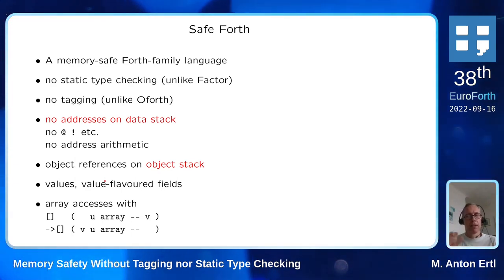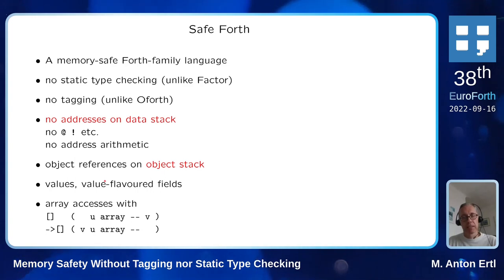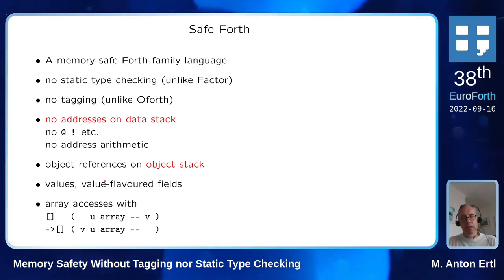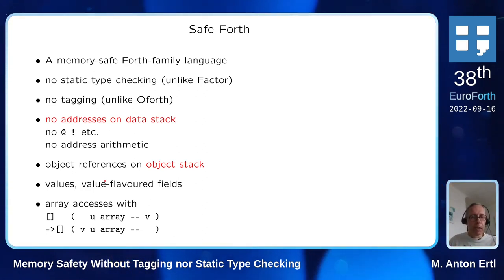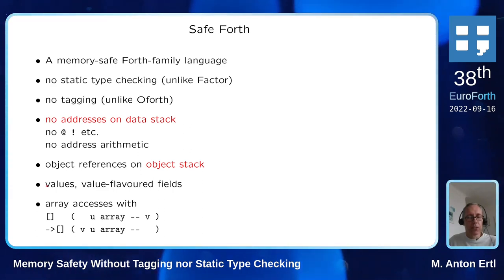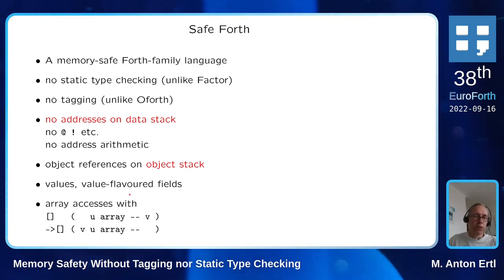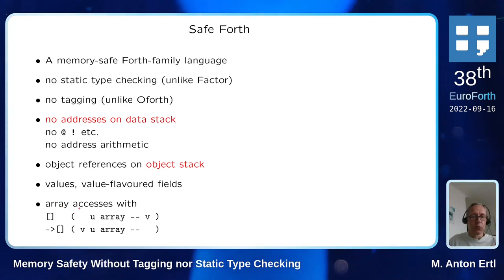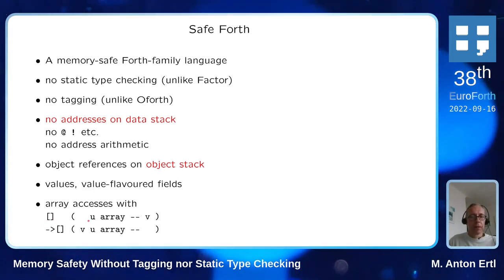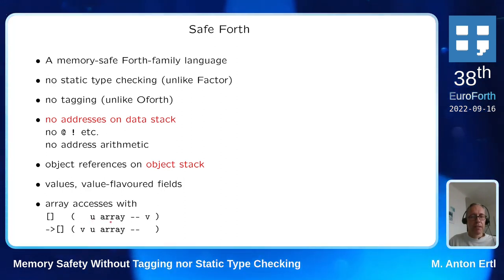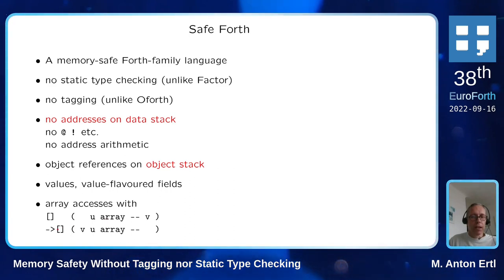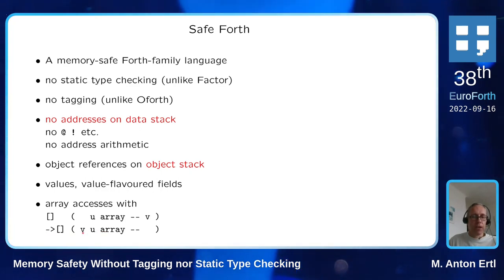I'm not going to discuss the object orientation of SafeForth in this talk — you can read about it in the paper. Because we have no fetch and store, we cannot use the standard Forth field words. Instead we have value-flavored fields, and instead of variables we use values. For array accesses we have bracket-open and bracket-close for reading, and a store-into-array word where you have a value, index, and array reference.